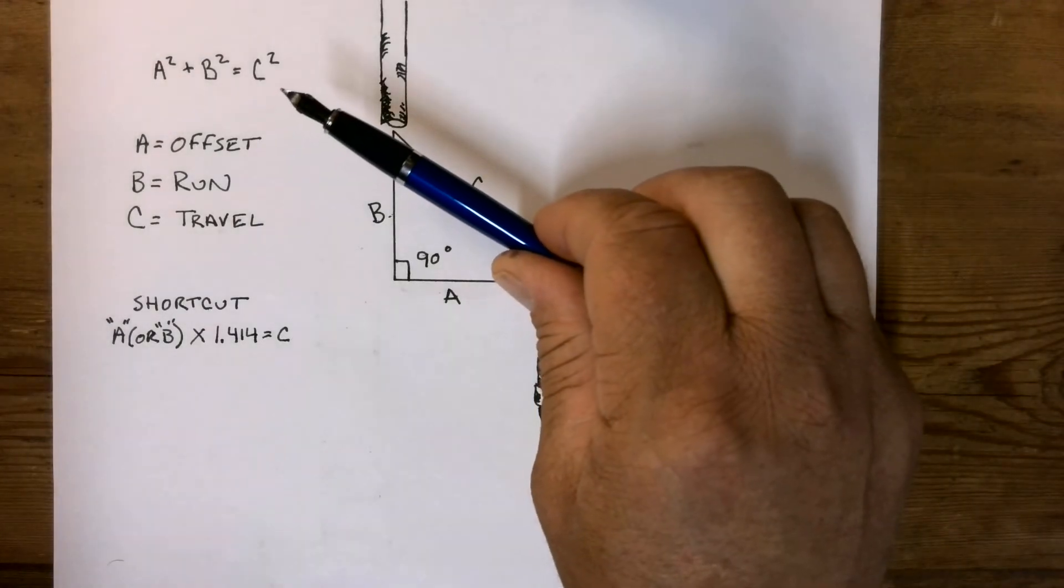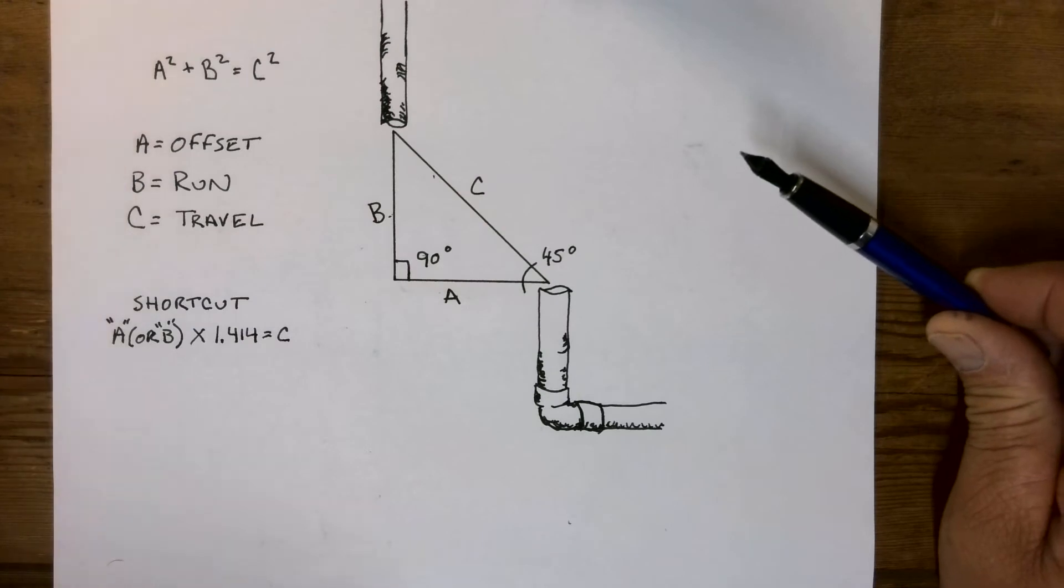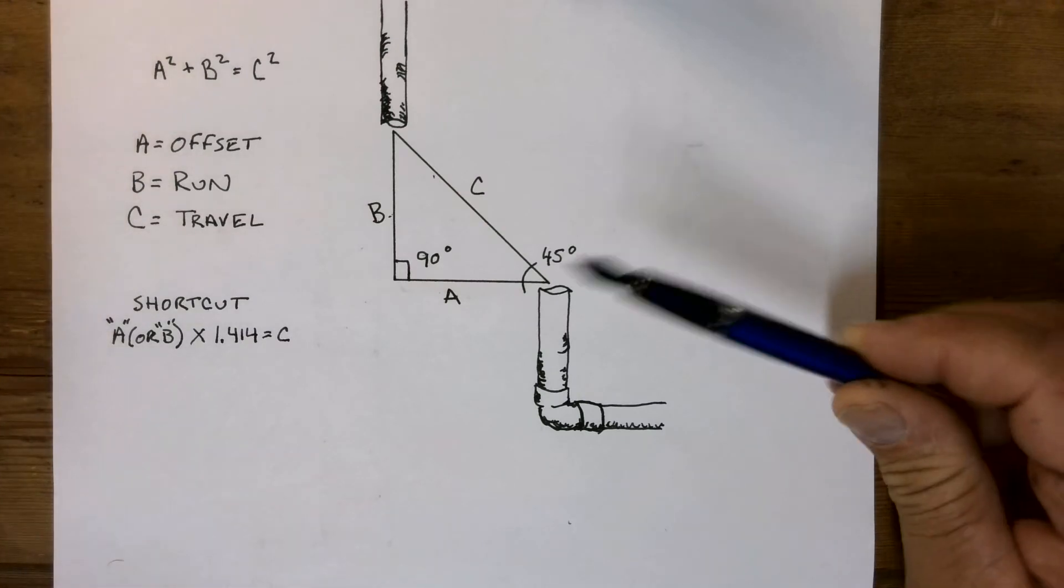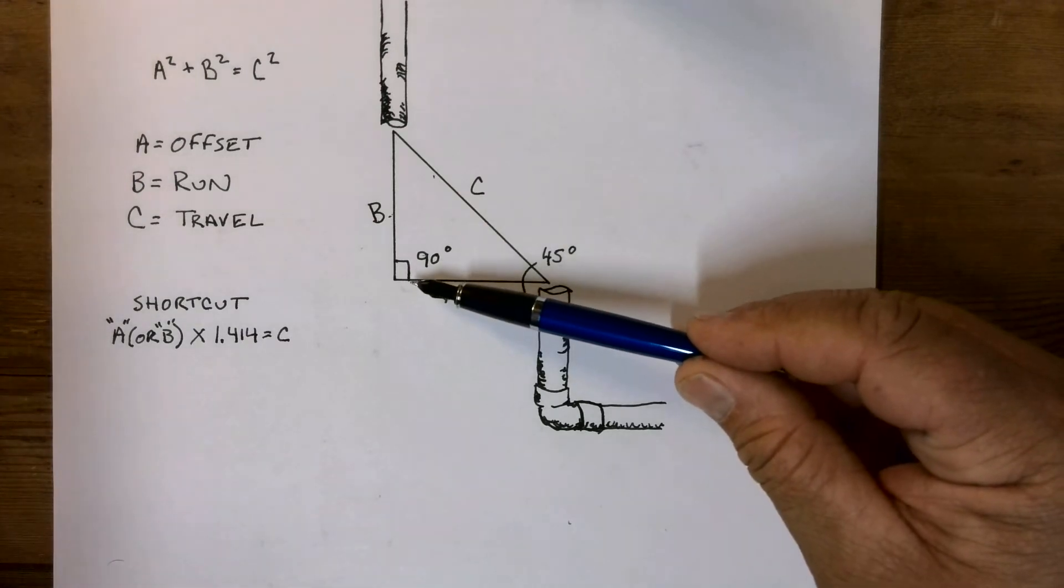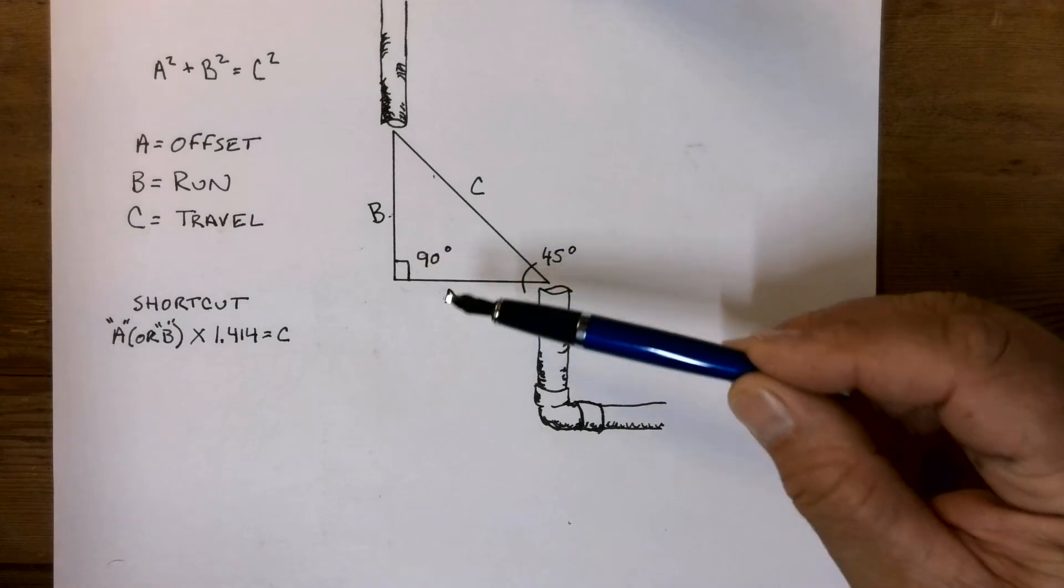A squared plus B squared equals C squared is what's called the Pythagorean theorem. That is true for all right triangles, and a right triangle is in a 90-degree corner.